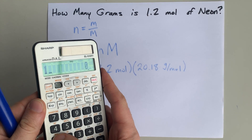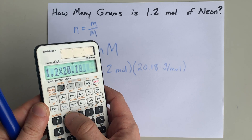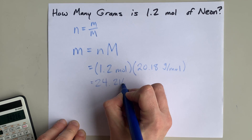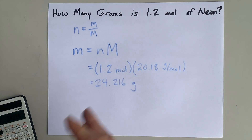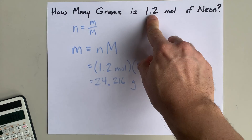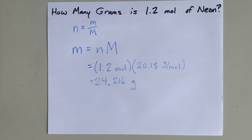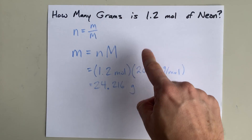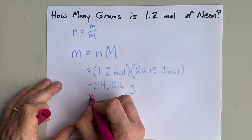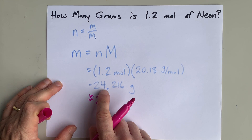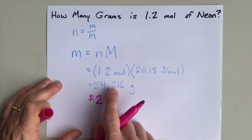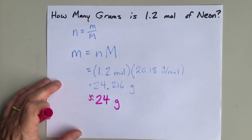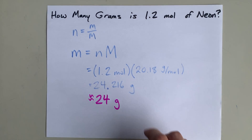On my calculator, I'm going to do 1.2 times 20.18. I get 24.216 grams. Then I've got to watch out for significant figures. This number only has two significant digits. The molar mass had four. For multiplication, I take the one with the fewest significant digits. So my final answer is 24 — the second significant digit. What comes after it is less than 0.5, so I keep the four as is. The units are grams. Thanks for being with me, and best of luck.